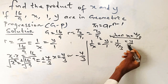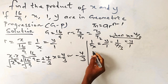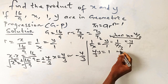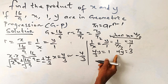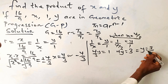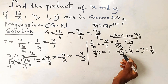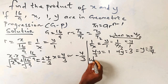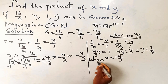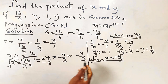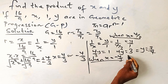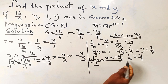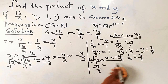Cross-multiplying, we get 4 over 3 times y equals 1 times 1. So 4y equals 3, and dividing both sides by 4, y equals 3 over 4 when x equals 4 over 3.